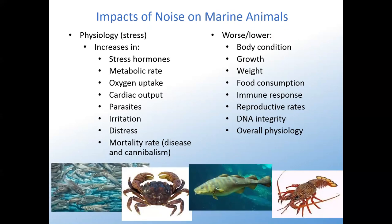Stress is one of the big impacts, shown by increases in stress hormones, metabolic rates, oxygen uptake, greater cardiac output, more parasites, more irritation, more distress, and a higher mortality rate from disease and cannibalism. Also worse body condition, lower growth, lower weight, less food consumption, worse immune response, lower reproductive rates, worse DNA integrity, and overall physiology is worsened.